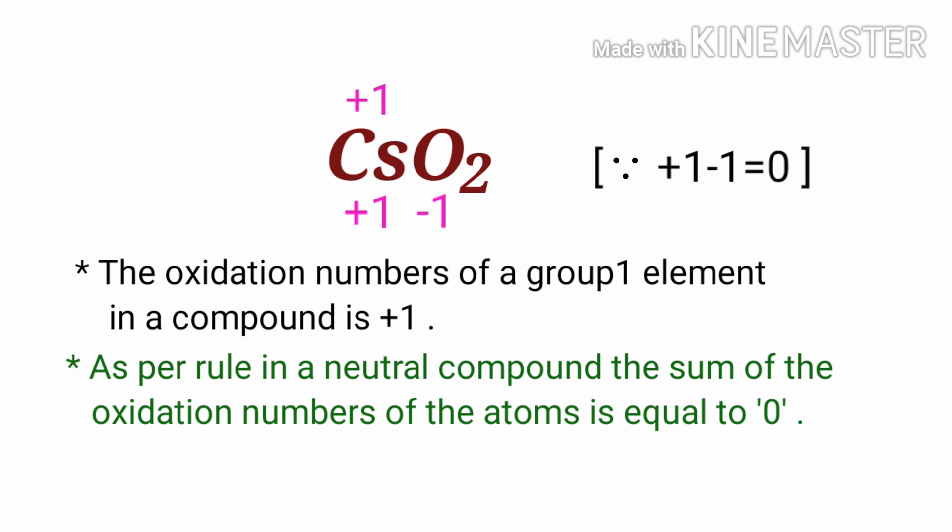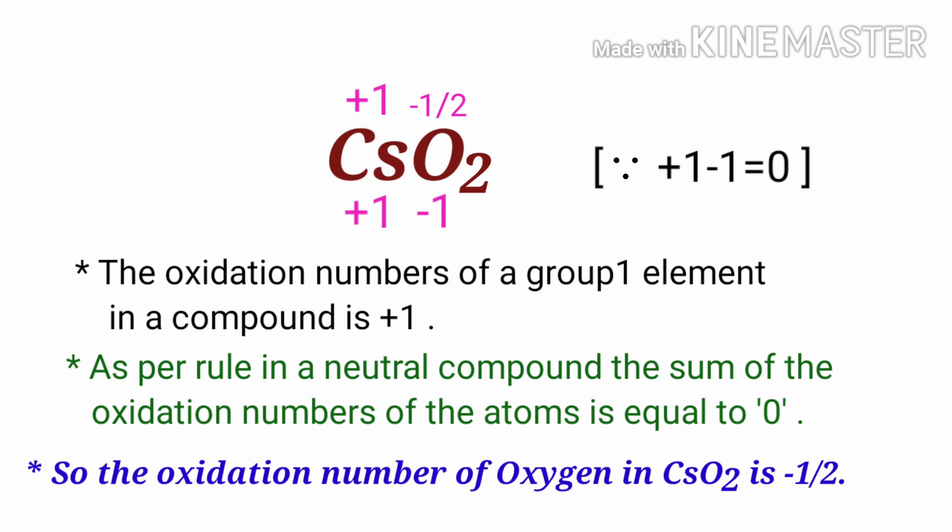In the O2 element, there are two oxygen atoms present. Therefore, we can write the oxidation number of the oxygen is minus 1 by 2. So the oxidation number of oxygen in cesium superoxide is minus 1 by 2.